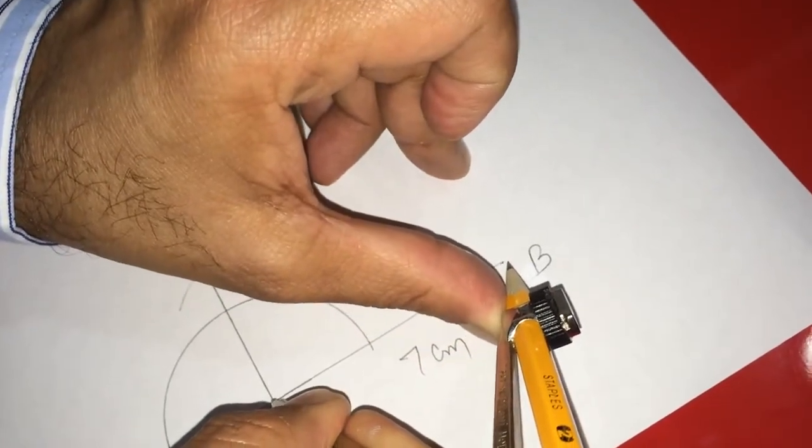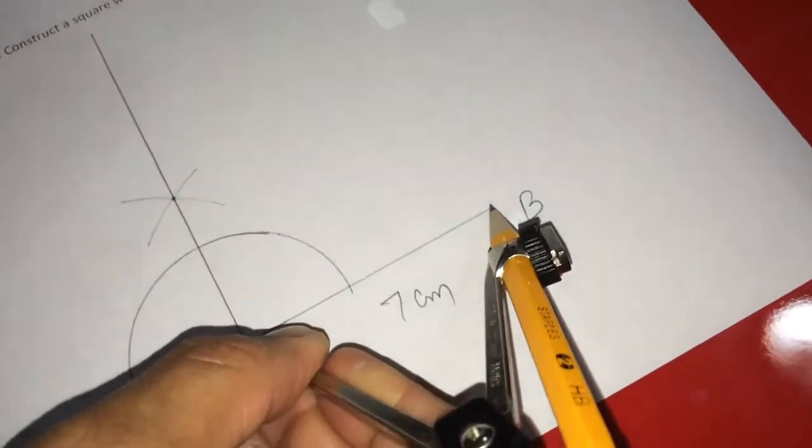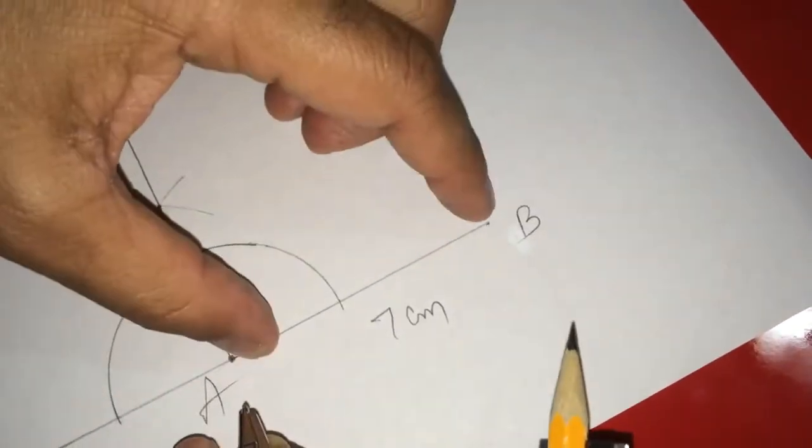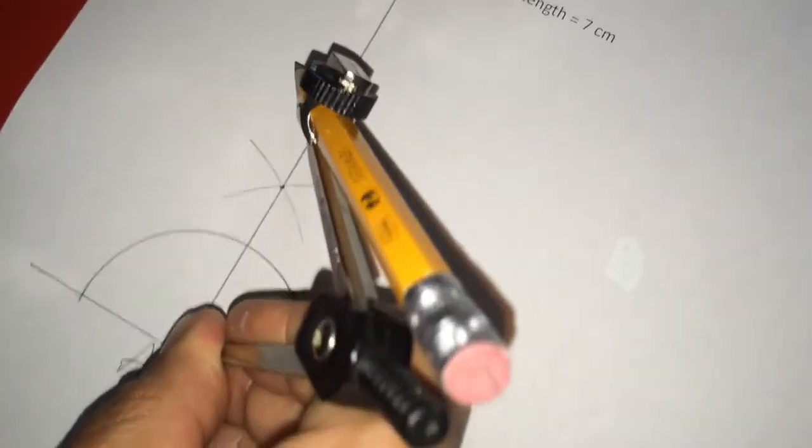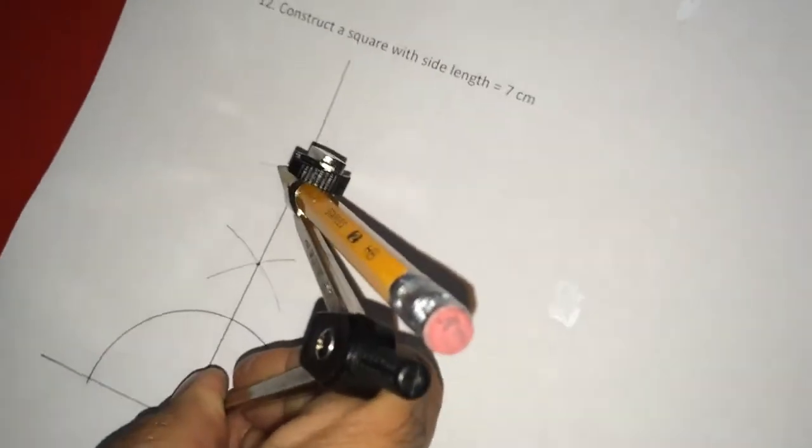So, I am putting this pencil edge here at B. So, now AB is exactly 7 centimeters. So, with A as center, this time, I am drawing an arc like this.